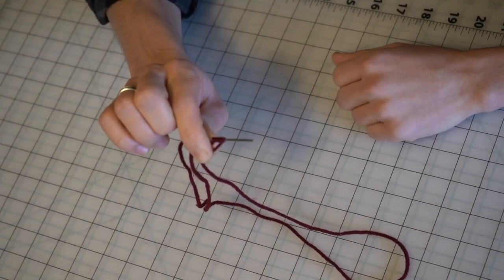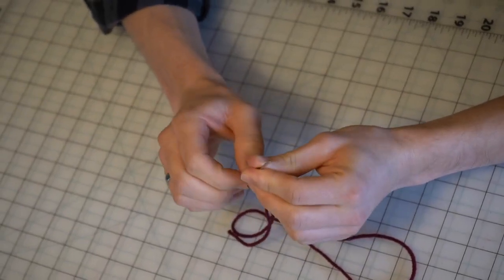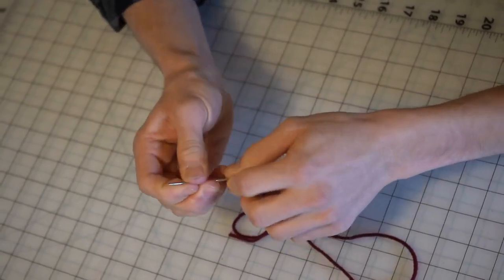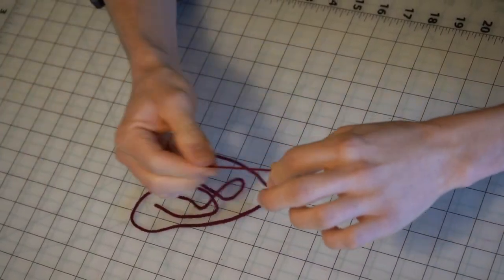You have all these loops on here. You're going to pinch those with your other hand tightly and then start pulling them off the needle towards the end of your thread. All the way down to the end.